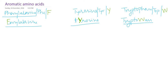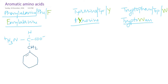Let me write the structure. All amino acids have a carboxyl group, an amino group, a hydrogen, and a side chain. For phenylalanine, the side chain contains a benzene ring.